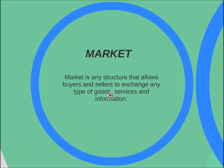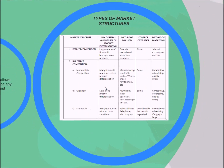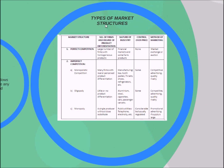Basically, the number of sellers determines the degree of competition in the market, and the type of product they are selling makes different types of market structure. The whole market structure is divided into two types: one where there is perfect competition and the other where there is imperfect competition.